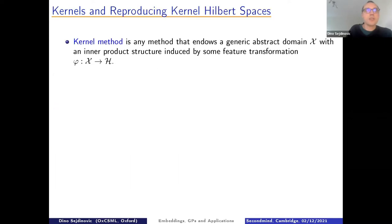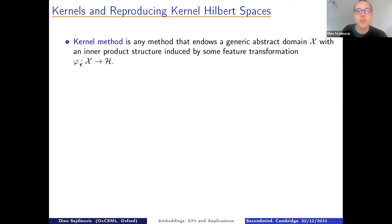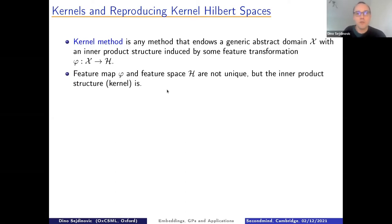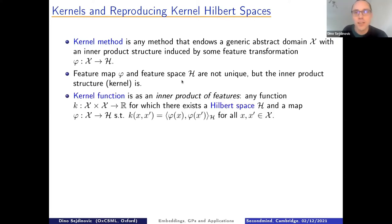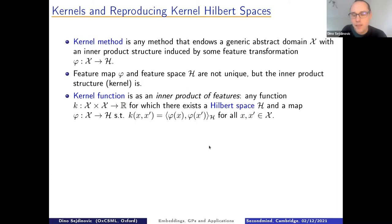I'll start with background on kernel embeddings, and then get into two specific applications. One deals with statistical downscaling and the other with making causal inferences based on multiple unmatched datasets. A kernel method is any method that endows a generic abstract domain X with some inner product structure, induced by a feature transformation phi — a mapping from that domain into a Hilbert space H. Different feature maps may induce the same inner product structure, so we study that structure directly, which we call the kernel.